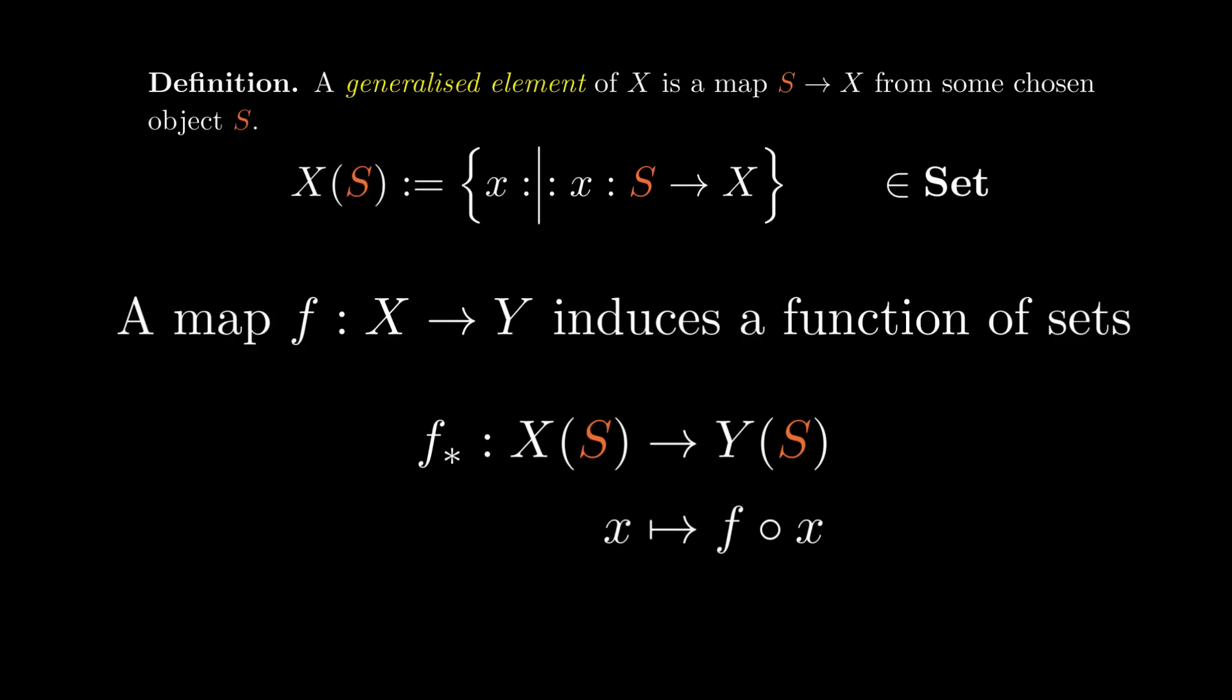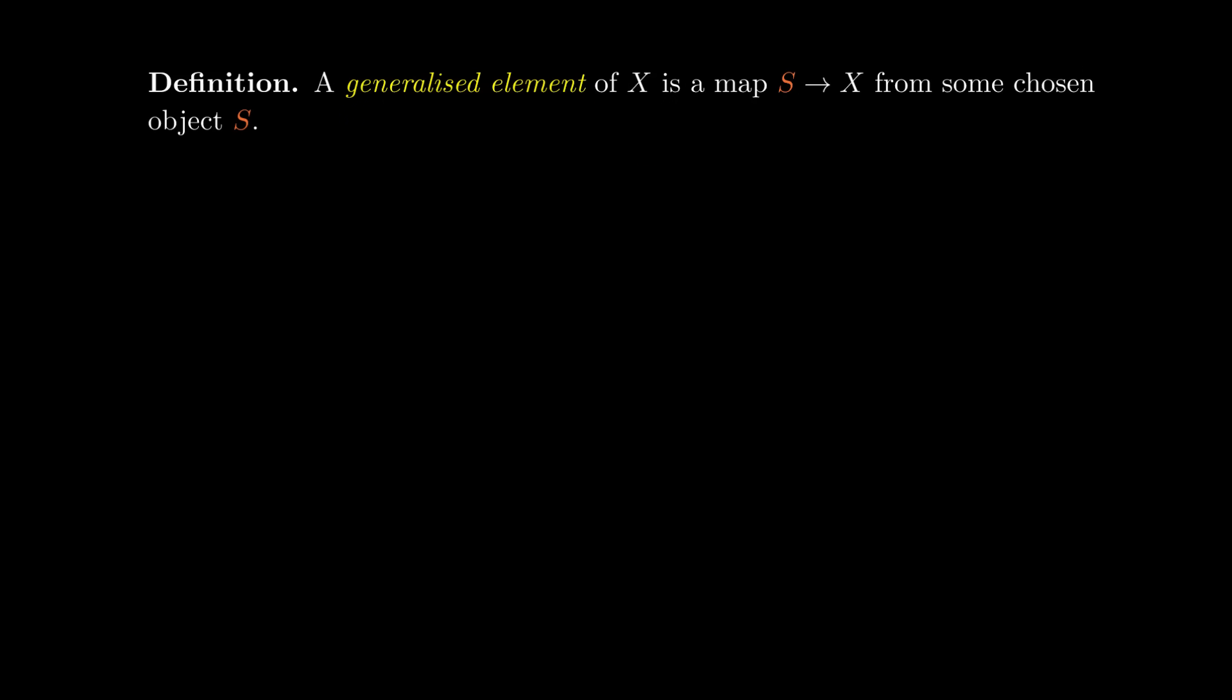What's more, any map between objects from x to y defines a genuine function of sets from the s-shaped elements of x to the s-shaped elements of y. We can use these generalized elements to make more sense of the category theoretic fiber product. Specifically, the set of s-shaped elements of the category theoretic fiber product of x and y over z is exactly the set theoretic fiber product of the corresponding sets of s-shaped elements of x and s-shaped elements of y over s-shaped elements of z, and this correspondence is pretty much by definition.